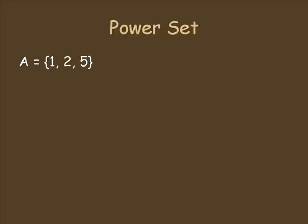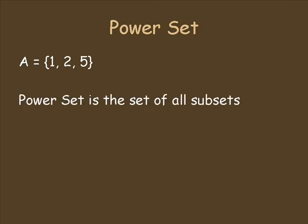Cantor found levels of infinity higher than the continuum. He did this by using the idea of the power set. Here's how it works. Take a simple set with three elements: 1, 2, and 5. The power set is just the collection of all subsets that you can make.